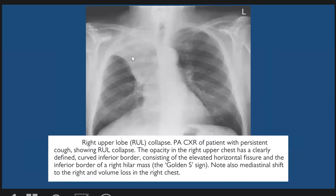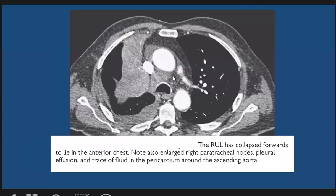Here is a patient with right upper lobe collapse with the Golden sign due to a mass lesion. You can see the minor fissure is elevated with this characteristic shape. On CT scan the same patient shows the mass lesion and the right upper lobe collapse, and the patient also has a right-sided pleural effusion.